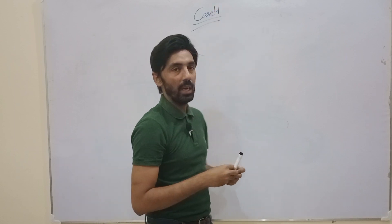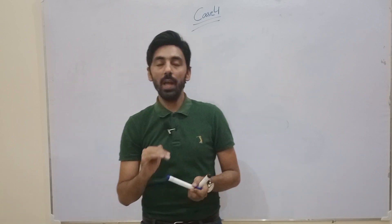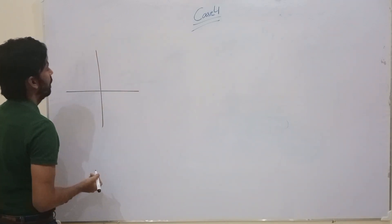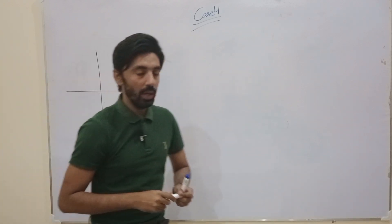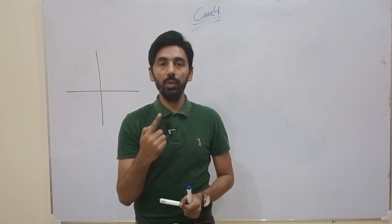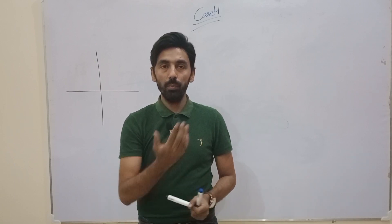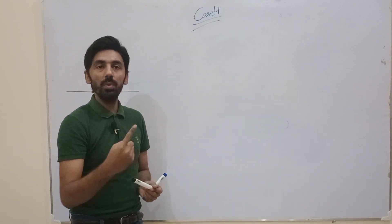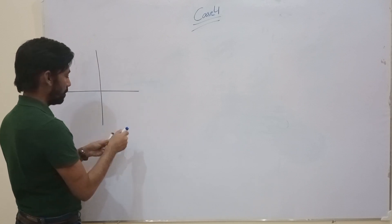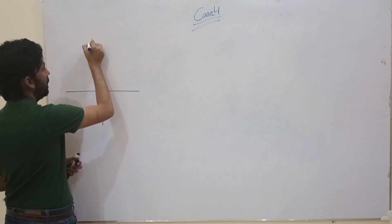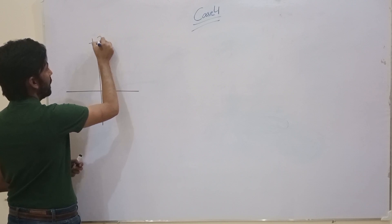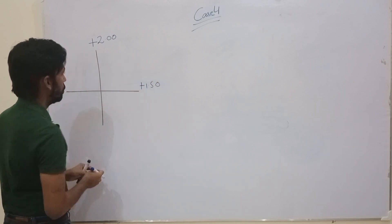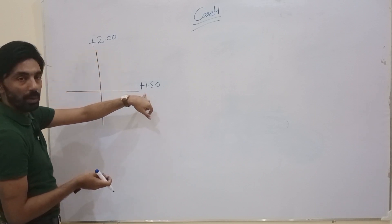Now Case 4 — the final case — is about finding the final prescription in just cylindrical form. In this case, at least one meridian must be neutralized at zero after accounting for working distance. Suppose the 90-degree meridian is neutralized at +2 and the 180-degree meridian is neutralized at +1.5.